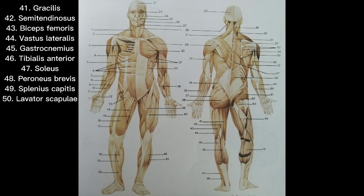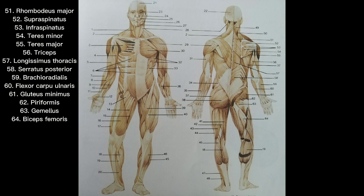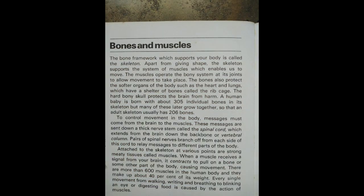The posterior muscles include: 49. Splenius capitis, 50. Levator scapulae, 51. Rhomboideus major, 52. Supraspinatus, 53. Infraspinatus, 54. Teres minor, 55. Teres major, 56. Triceps, 57. Longissimus thoracis, 58. Serratus posterior, 59. Brachioradialis, 60. Flexor carpi ulnaris, 61. Gluteus minimus, 62. Piriformis, 63. Gemellus, 64. Biceps femoris. Muscles account for about 35 to 45 percent of the weight of the human body.